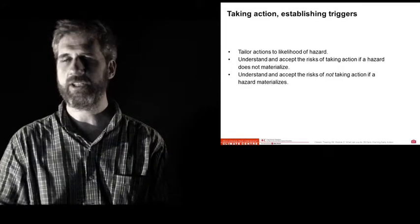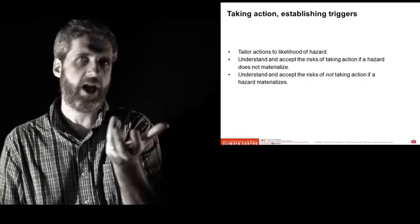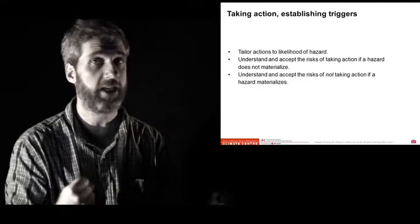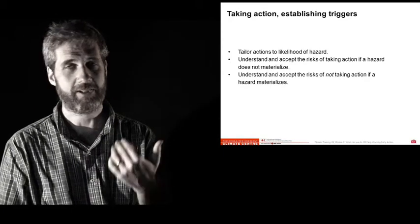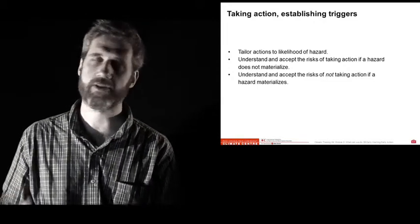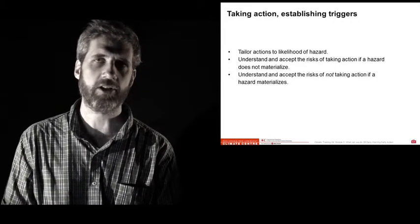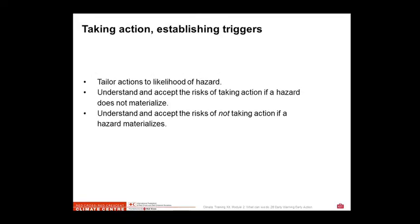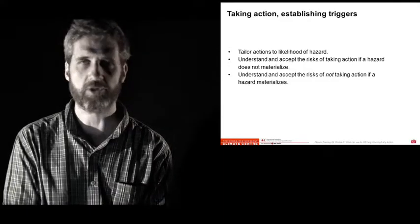To take action to establish these triggers, you need to tailor the action to the hazard and its chance of occurring. You don't want to make a massive move for a small threat or a little move for a gigantic threat. You need to understand and accept that if you take action, maybe some people will think it wasn't worth it. Because with climate science and weather forecasts, you cannot know for sure that something will happen. You can only know that something is much more likely to happen. The core for you will be to examine the trade-offs. What if I act and the disaster doesn't happen? What if I don't act and the disaster happens? The consequences of those two, and the costs of action and inaction, should shape your analysis.